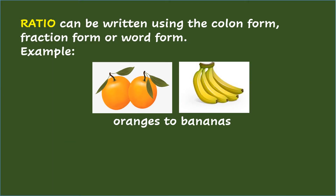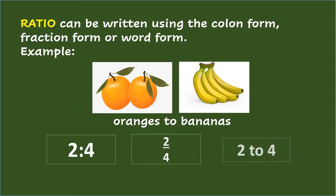Ratio can be written using the colon form, fraction form, or word form. With the example of oranges and bananas, the ratio of oranges to bananas using the colon form is written as 2 is to 4. Using the fraction form, it is written as 2/4. And in word form, it is written as 2 to 4.